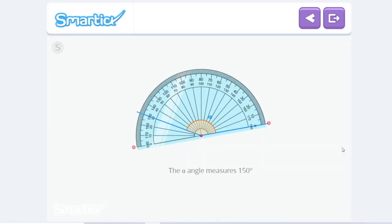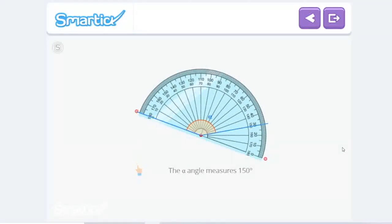We can also measure it clockwise. Now we have to orientate one side with the 0. And use the inner scale. As you can see, the angle measures the same. The direction is not important because it is the same angle.